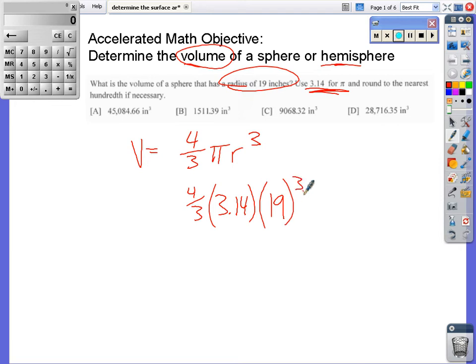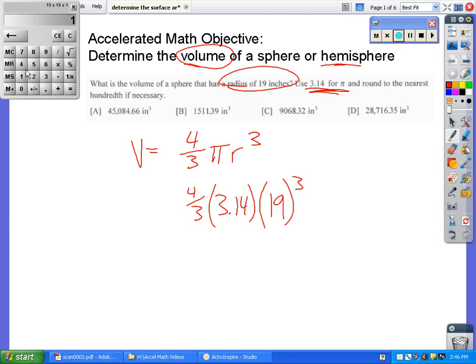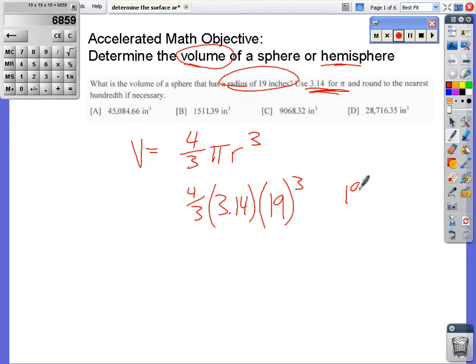The calculator I have over here doesn't have the best features, so I'm going to get 19 to the third power, which just means 19 times 19 times 19. On most calculators, it's 19, you hit the little roof button, they call it a carat in mathematics, and raise it to the third power. You should get this 6859 number that I got. I'm going to put that in there times the 3.14 and times 4/3.